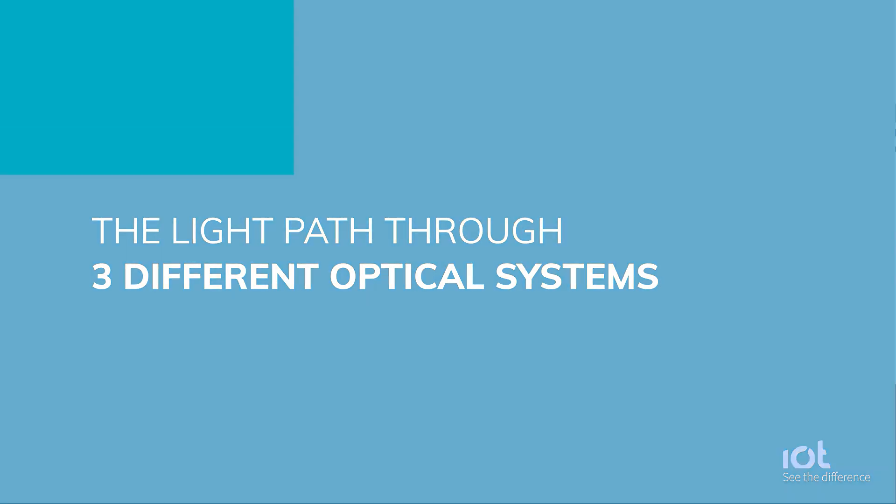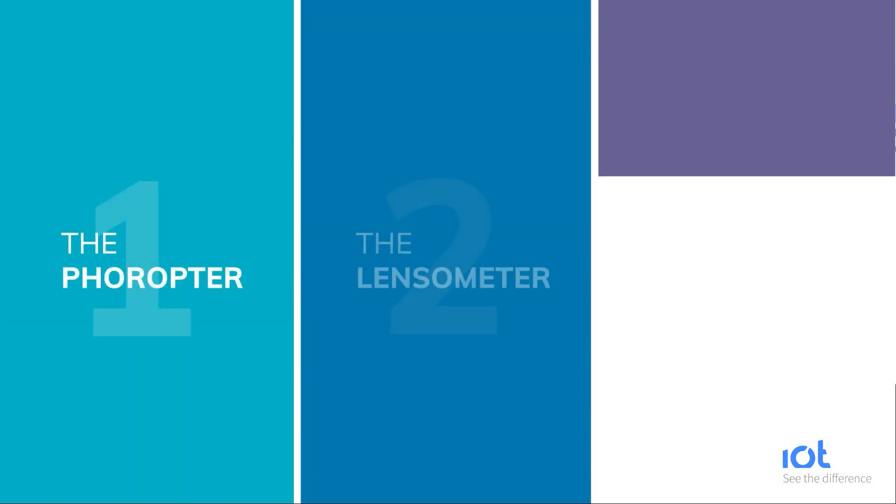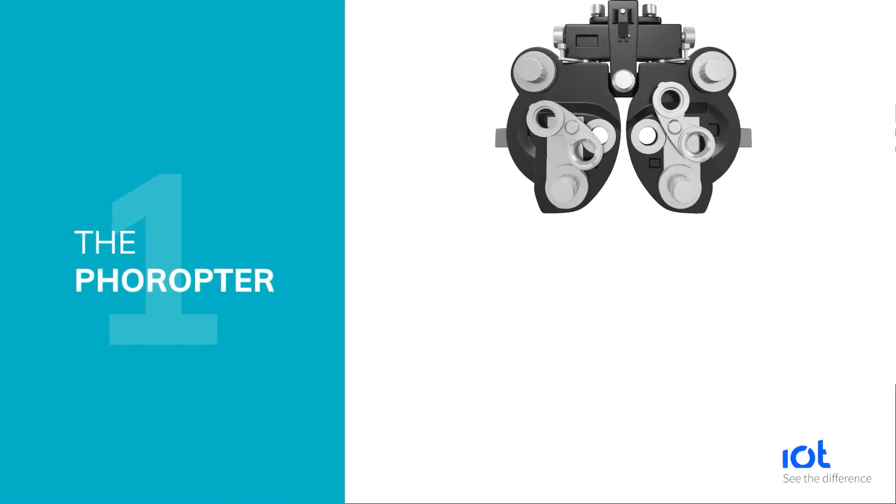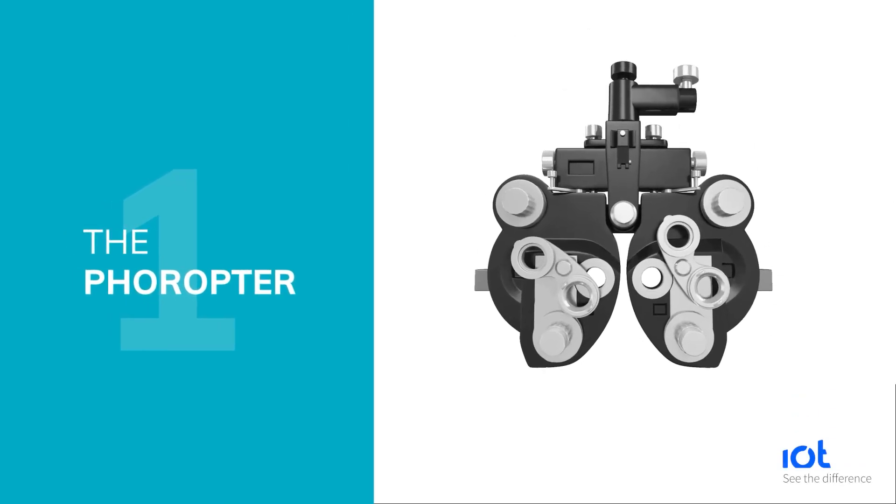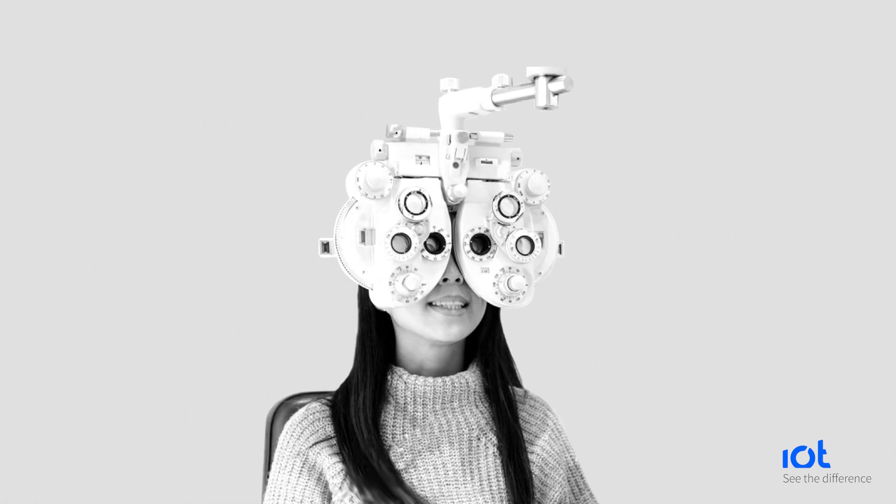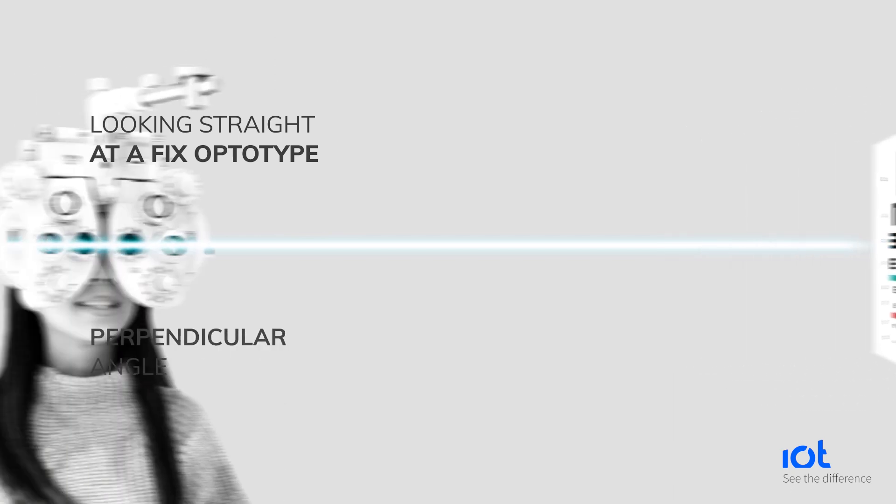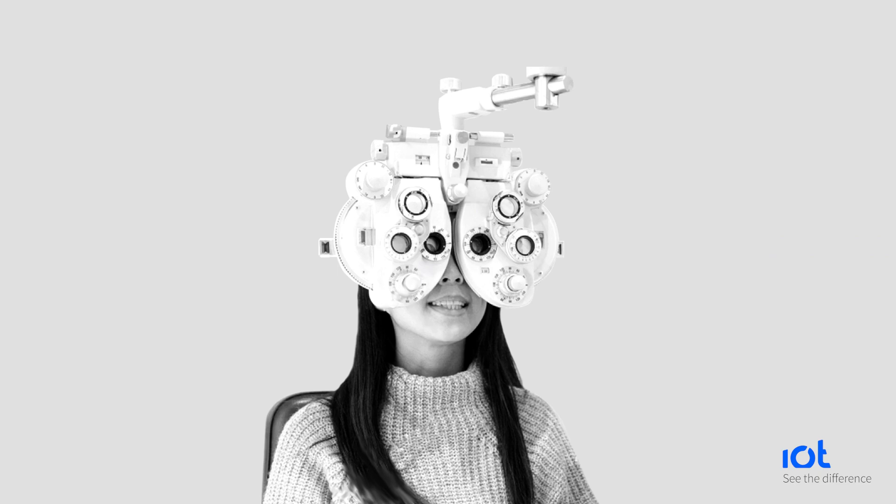Let's start by understanding the light path when passing through three main optical systems. The phoropter is used to obtain the patient's prescription. During the refraction, the patient is looking straight ahead. Eyes and lenses are perfectly perpendicular to each other and aligned with the eye chart. Light comes from the chart and reaches the center of the lens at a perpendicular angle.